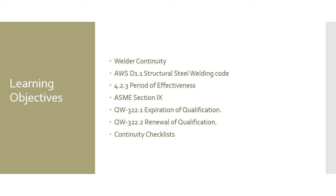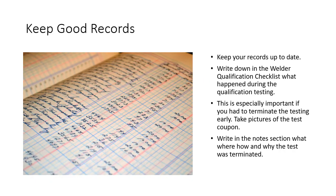We're going to touch base on welder continuity, covering AWS D1.1 Structural Welding Code paragraph 4.2.3, period of effectiveness. We'll also cover the sister paragraphs in ASME Section 9: QW-322.1, expiration of qualification, and QW-322.2, renewal of qualification. Then we'll talk about strategies to keep track of welder continuity, checklists, and my standard operating procedure.